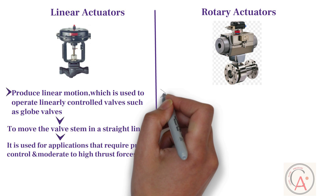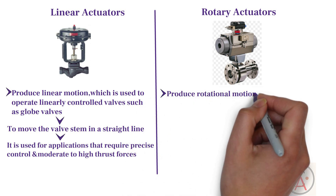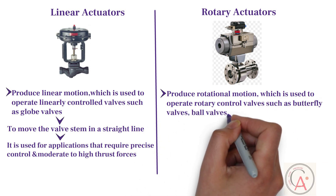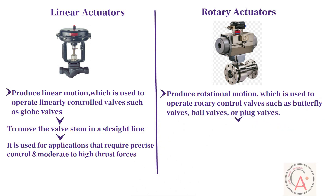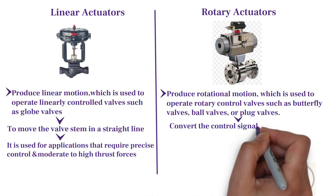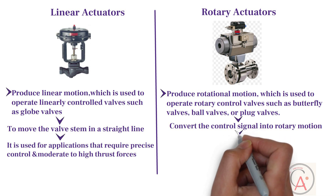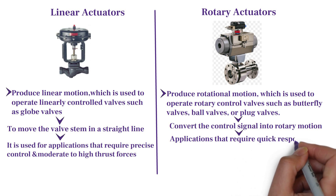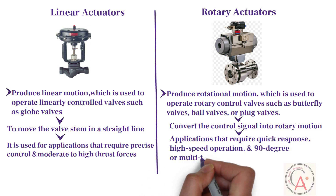On the other side, rotary actuators produce rotational motion, which is used to operate rotary control valves such as butterfly valves, ball valves, or plug valves. They convert the control signal into rotary motion to open, close, or modulate the valve's position. Rotary actuators are commonly used for applications that require quick response, high-speed operation, and 90-degree or multi-turn rotation.